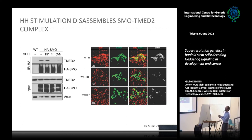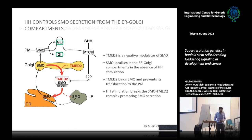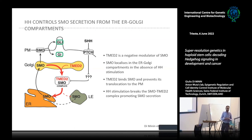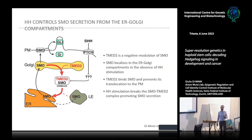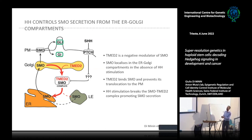We believe this disassembly leads to secretion of Smoothened from the Golgi to external compartments. Altogether, these data allow us to propose a novel model of Hedgehog pathway activation. In the absence of Hedgehog stimulation, Smoothened is trapped between the ER, Golgi, and late endosome compartments by interaction with TMED2. Sonic Hedgehog, through a process involving likely a post-translational modification of Smoothened, disrupts this interaction, allowing Smoothened to reach the plasma membrane where it promotes GLI-dependent and independent activities. Importantly, this model implies that Hedgehog signaling initiation cannot occur solely at the level of the primary cilia, since we clearly demonstrate an event occurring earlier than Smoothened translocation to the plasma membrane.